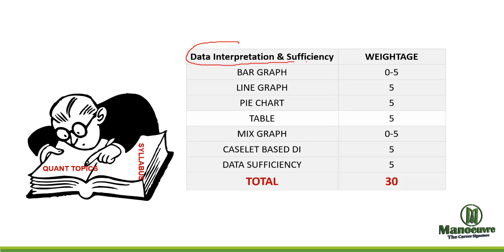Next is data interpretation and sufficiency which is very very important section of CET. 30 marks question will be based on DI and data sufficiency. Bar graph 0-5 questions, line graph 5 questions, pie chart 5 questions, table 5 questions, mixed graph 0-5 questions, caselet based DI 5 questions, data sufficiency 5 questions.